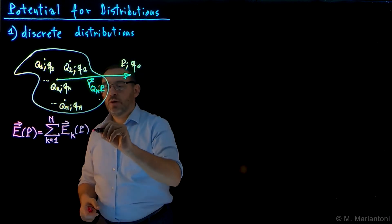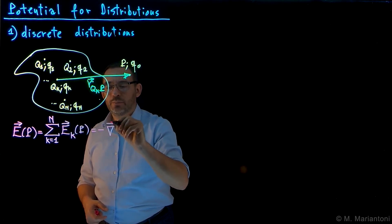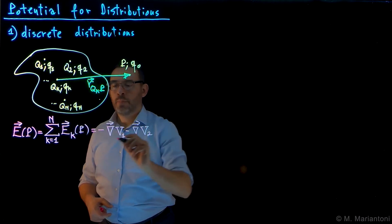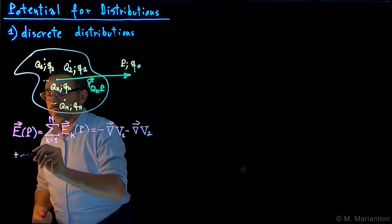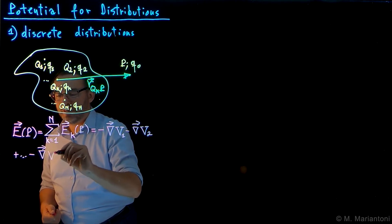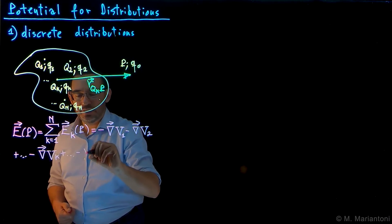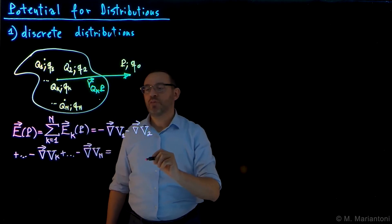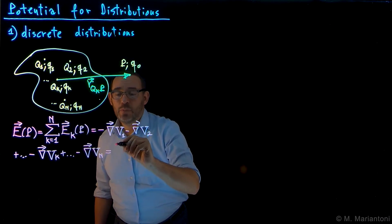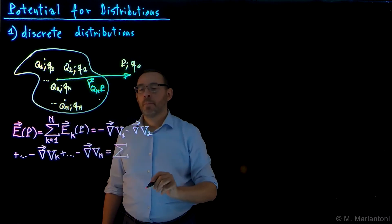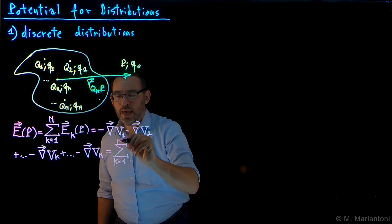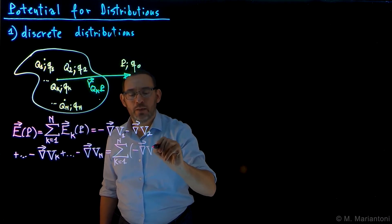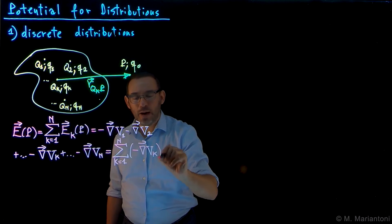We know that each field Ek can be written as minus the gradient of the electrostatic potential associated with that field. So we have: minus grad(V1) minus grad(V2), plus ... minus grad(Vk), plus ... minus grad(VN). This can be written as the sum from k=1 to N of minus the gradient of Vk, the electrostatic potential for the k-th particle.